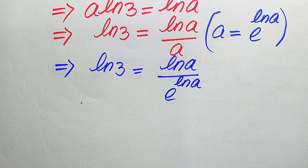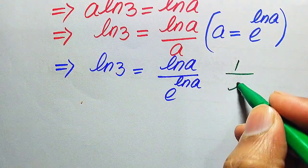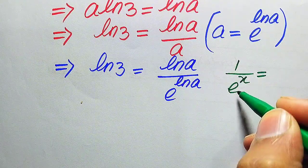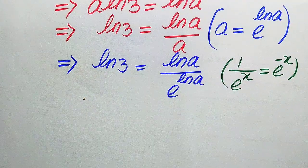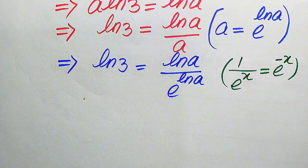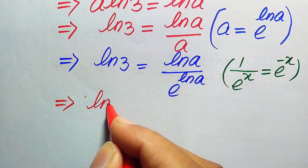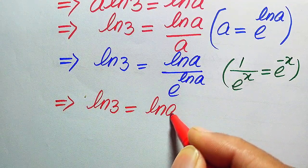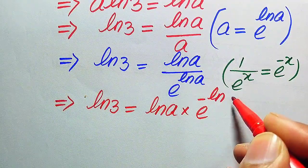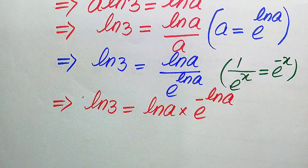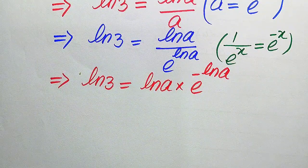In the next step, we move log a to the upside. We know that 1 over e to the power of x, when moved upward, becomes e to the power of minus x, according to the fraction property. So when we move this term upward, it is written as: log 3 equals log a multiplied by e to the power of minus log a.